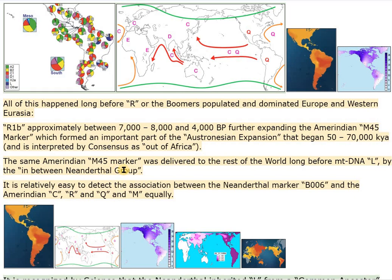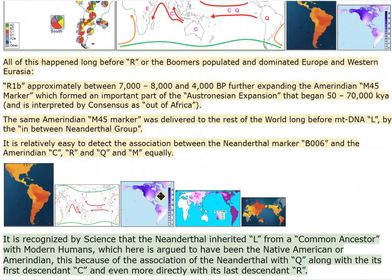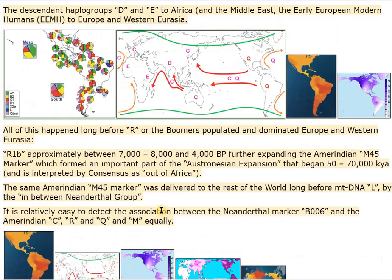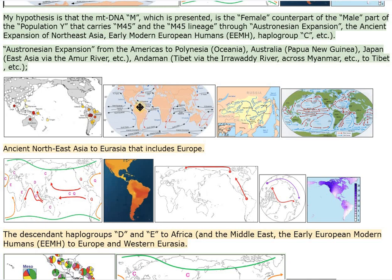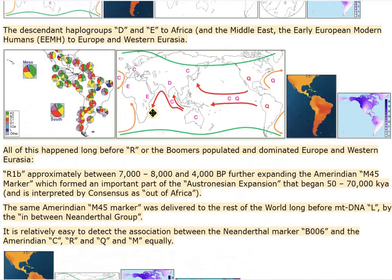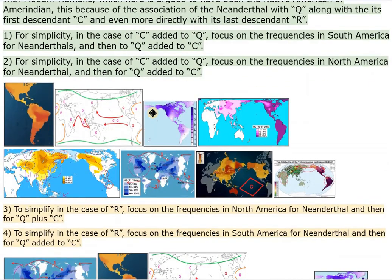The same Amerindian M45 marker was delivered to the rest of the world long before mtDNA L, by the in-between Neanderthal group. It is relatively easy to detect the association between the Neanderthal marker B006 and the Amerindian C, R, and Q, and M equally. It is recognized by science that the Neanderthal inherited L from a common ancestor with modern humans, which here is argued to have been the Native American or Amerindian, because of the association of the Neanderthal with Q along with its first descendant C and even more directly with its last descendant R.